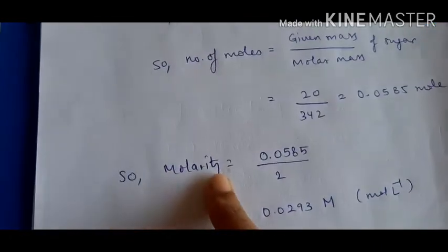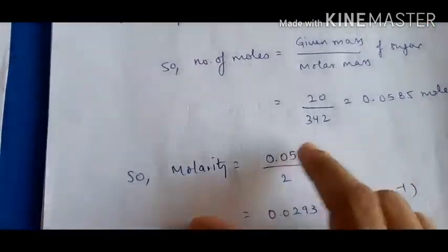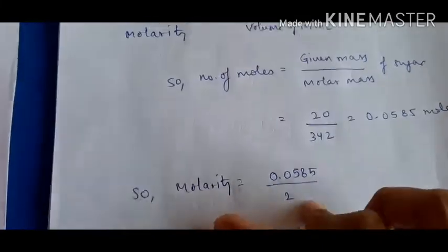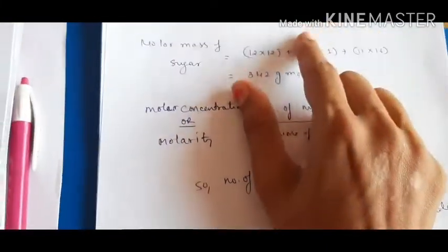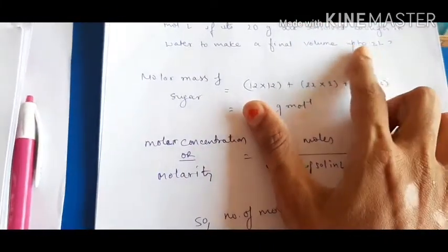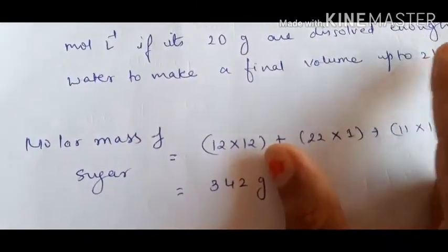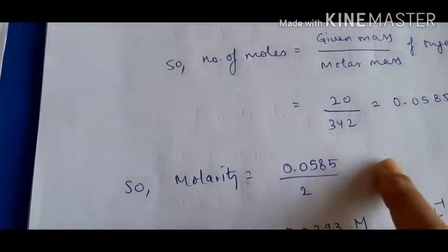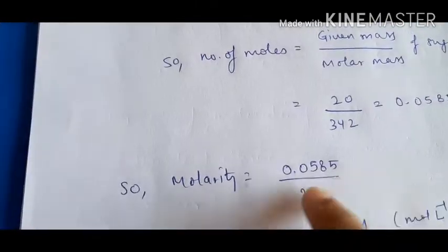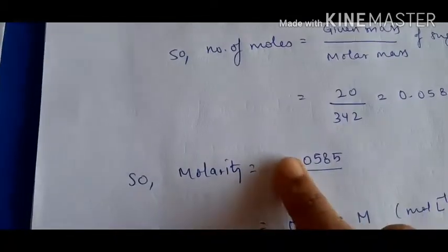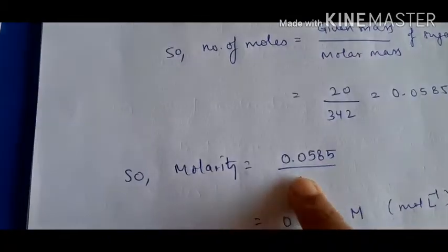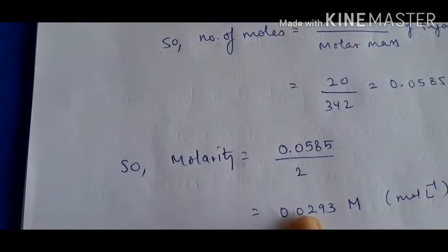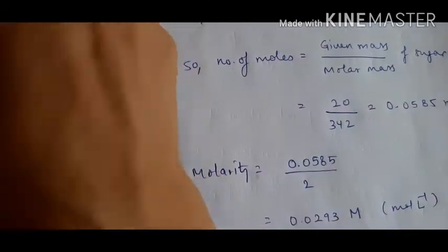Molarity = number of moles of sugar / volume of solution in litres. Volume given is 2 litres, so molarity = 0.0585 / 2. Using the rounded value 0.06 / 2 = 0.03 mol per litre to make calculation easier.